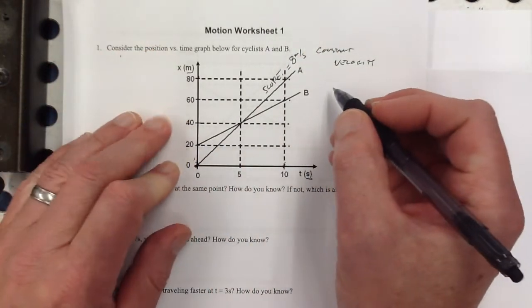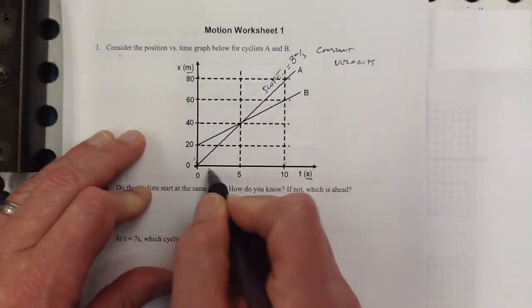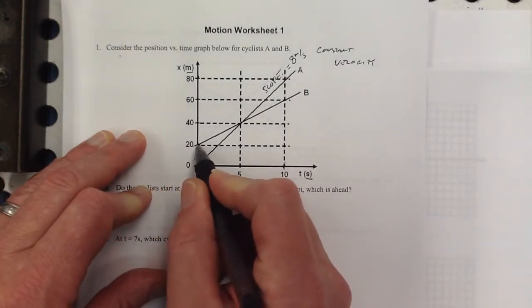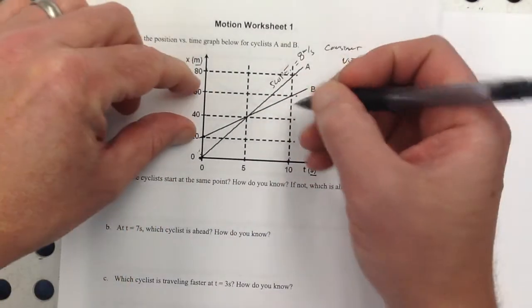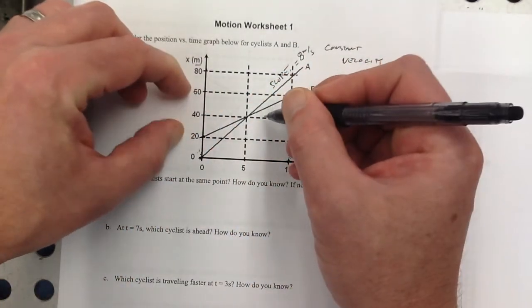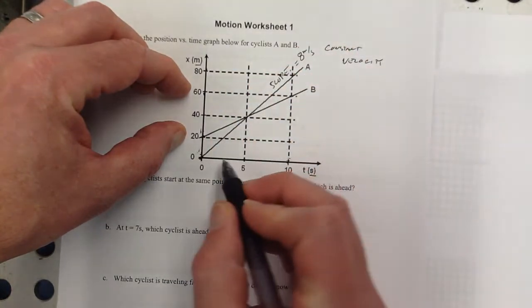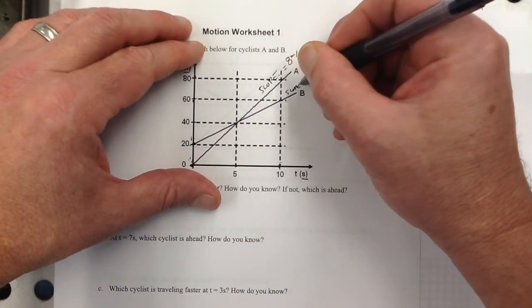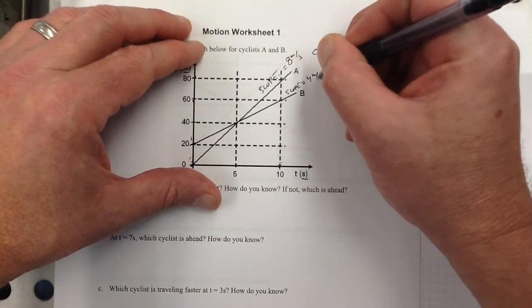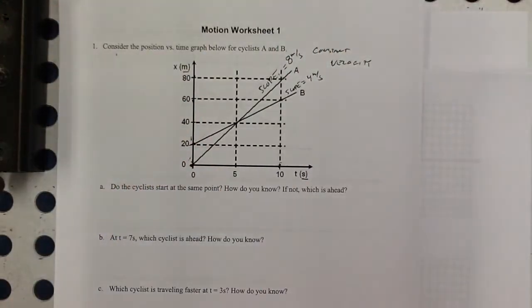And for cyclist B, the starting point is at 20, and the slope is, this is a rise from here to here, it's a rise of 40 over the same run of 10. So that's a slope of 4 meters per second.